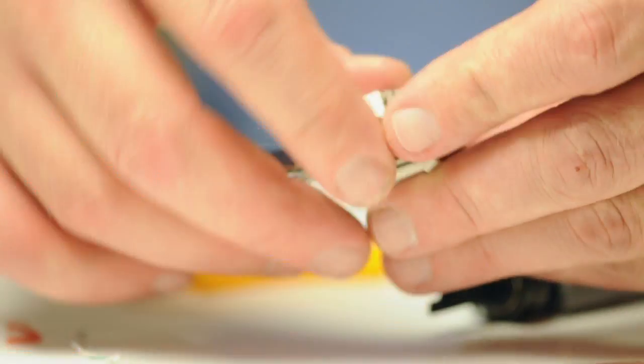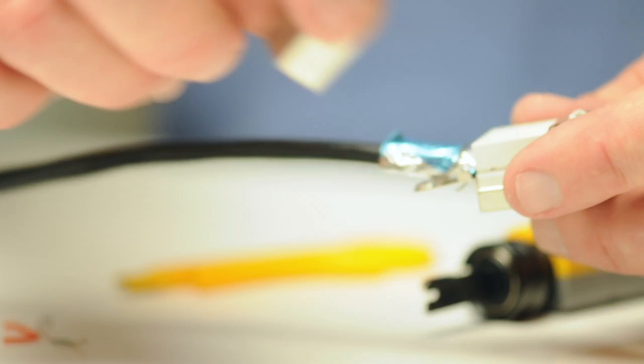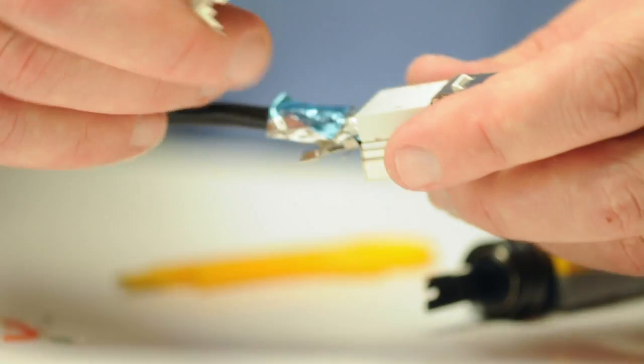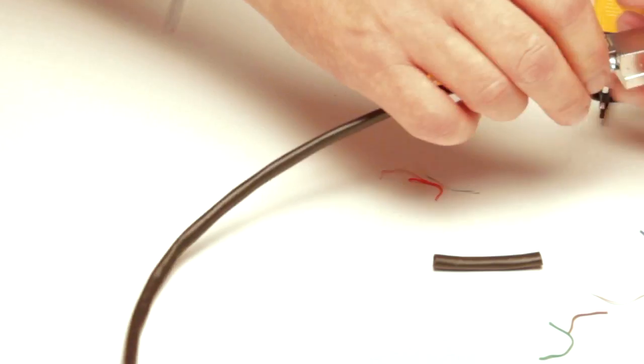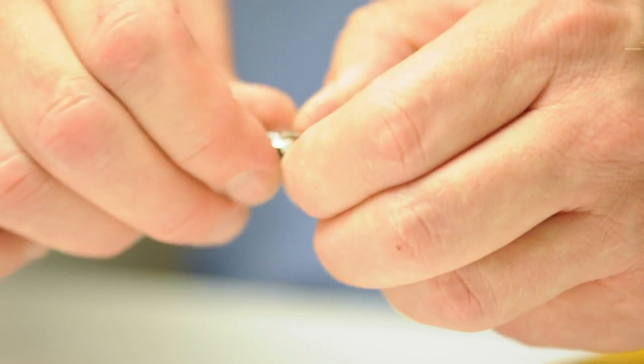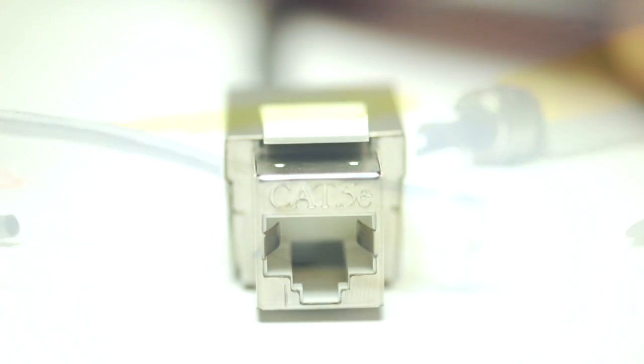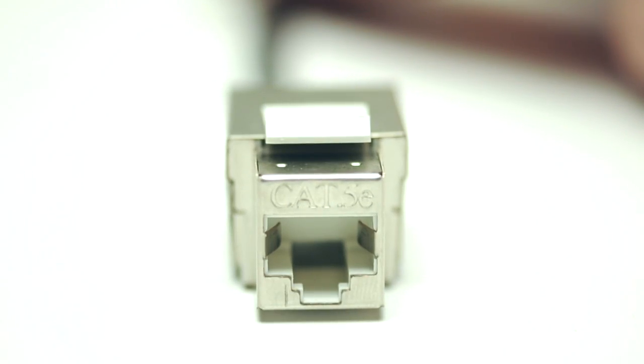Take the stuffer cap and push it onto the top of the jack. This helps keep the wire in place. Take the last shielded covering and insert it on top of the stuffer cap. This completes the installation and protects you from EMI.